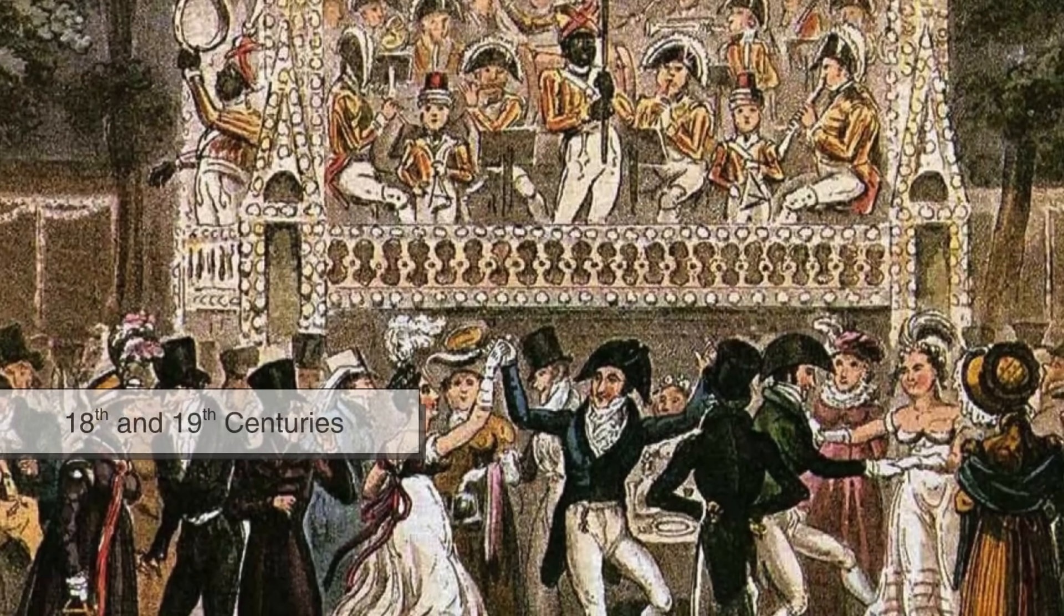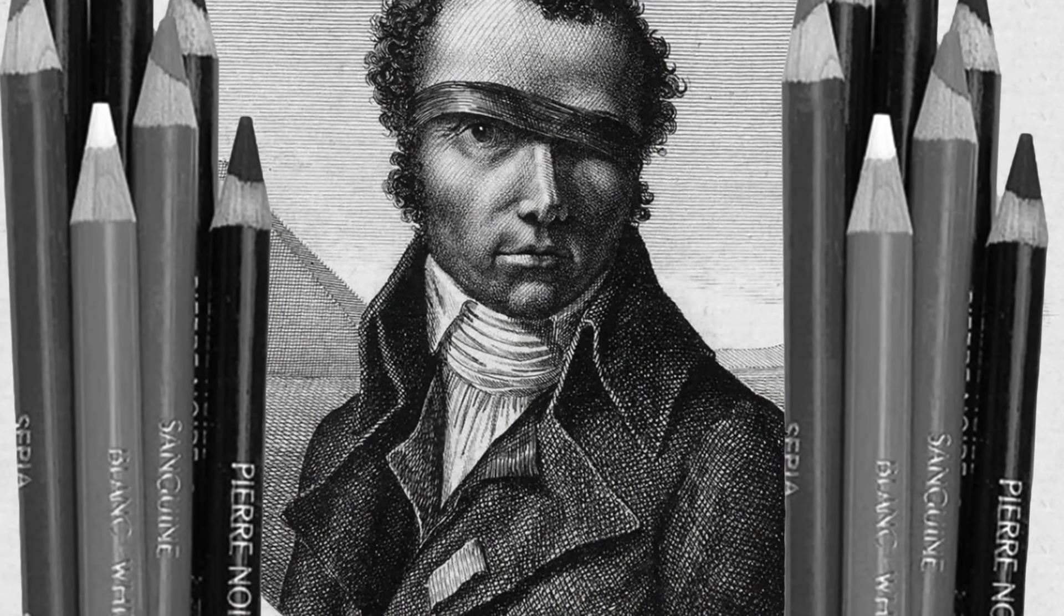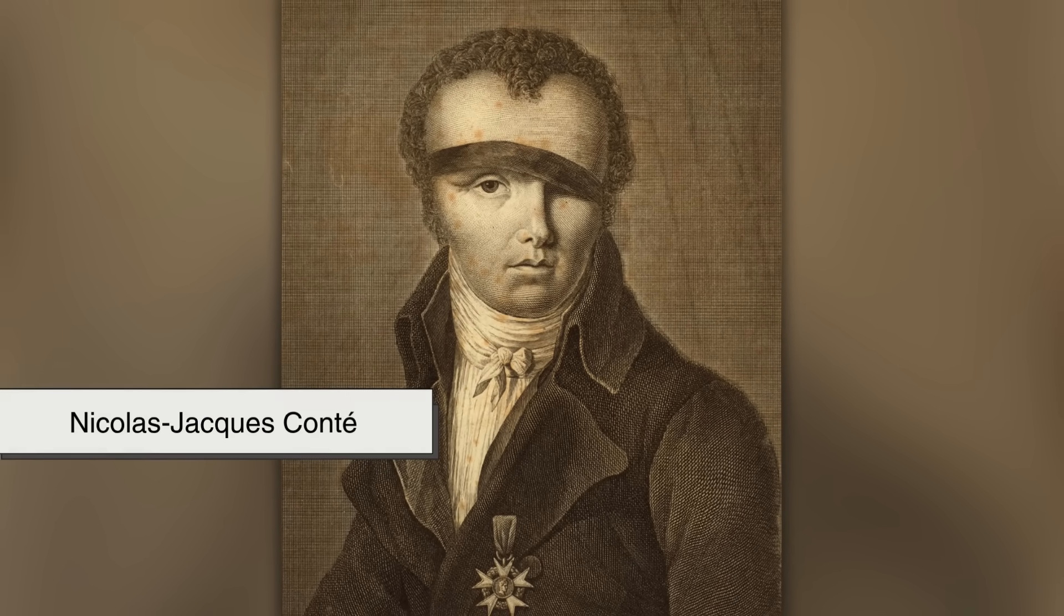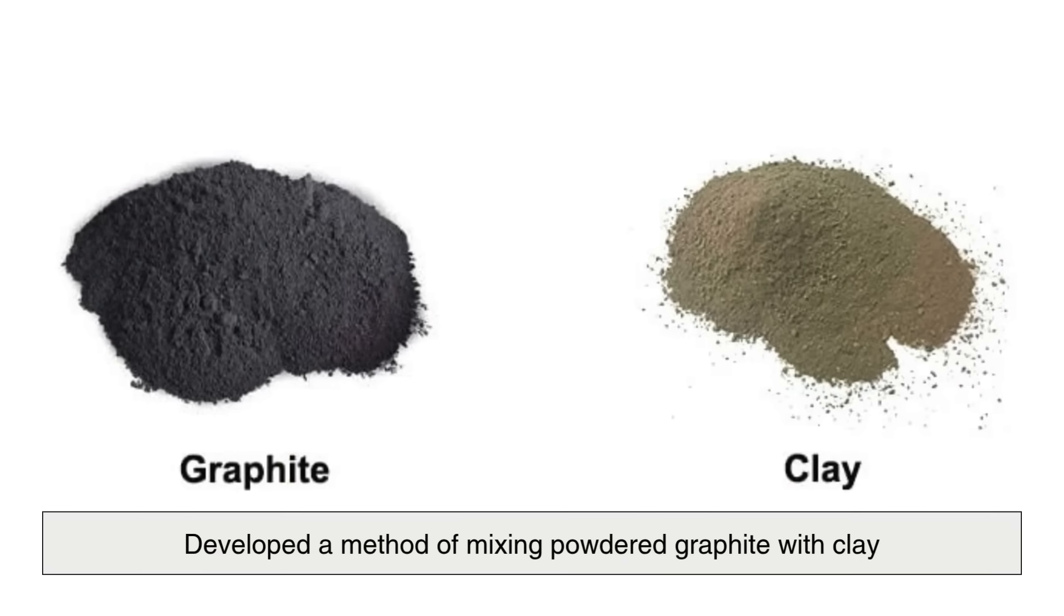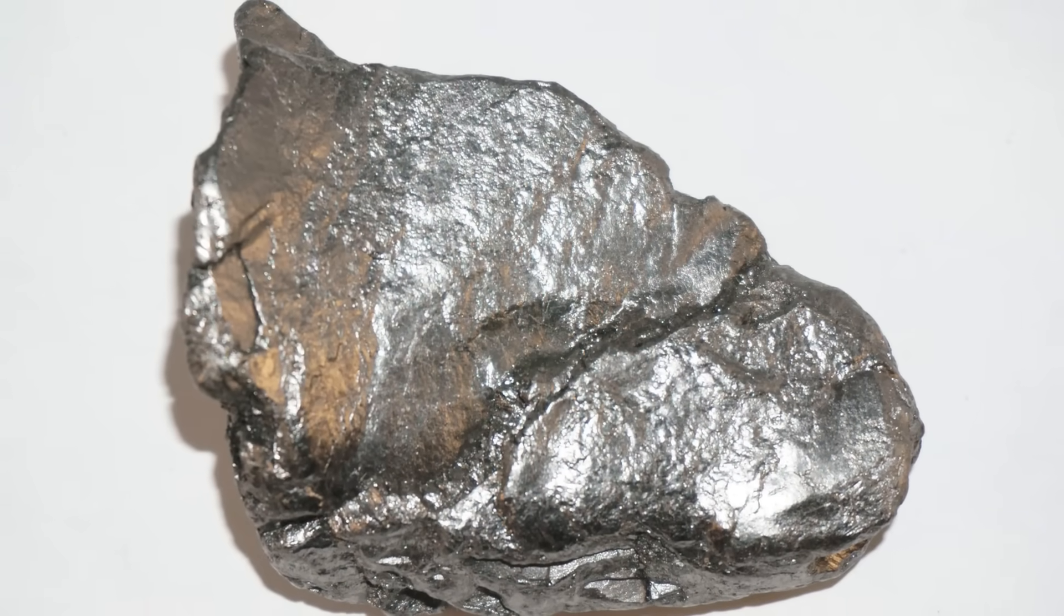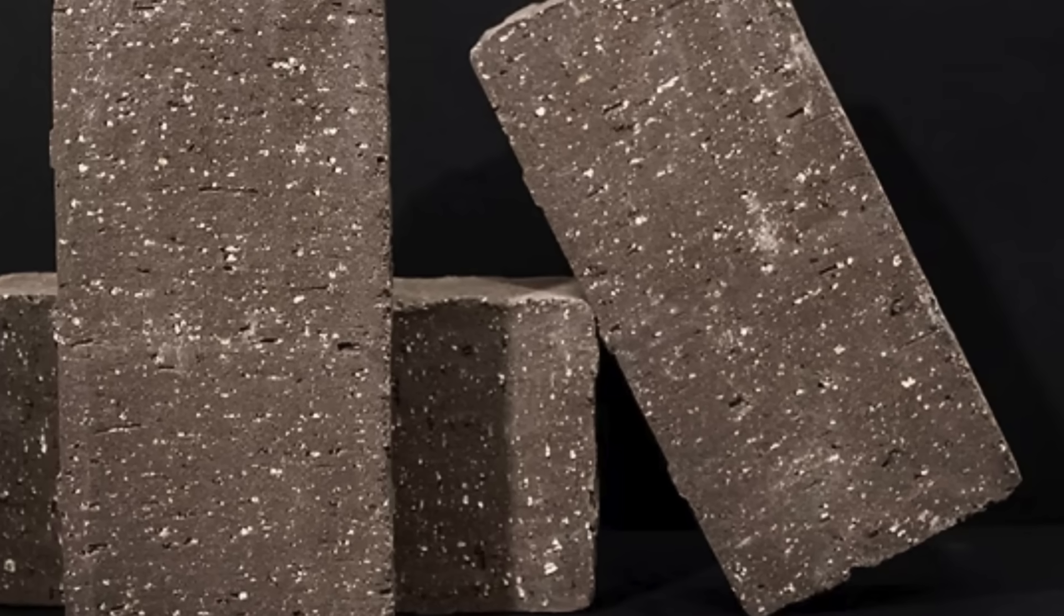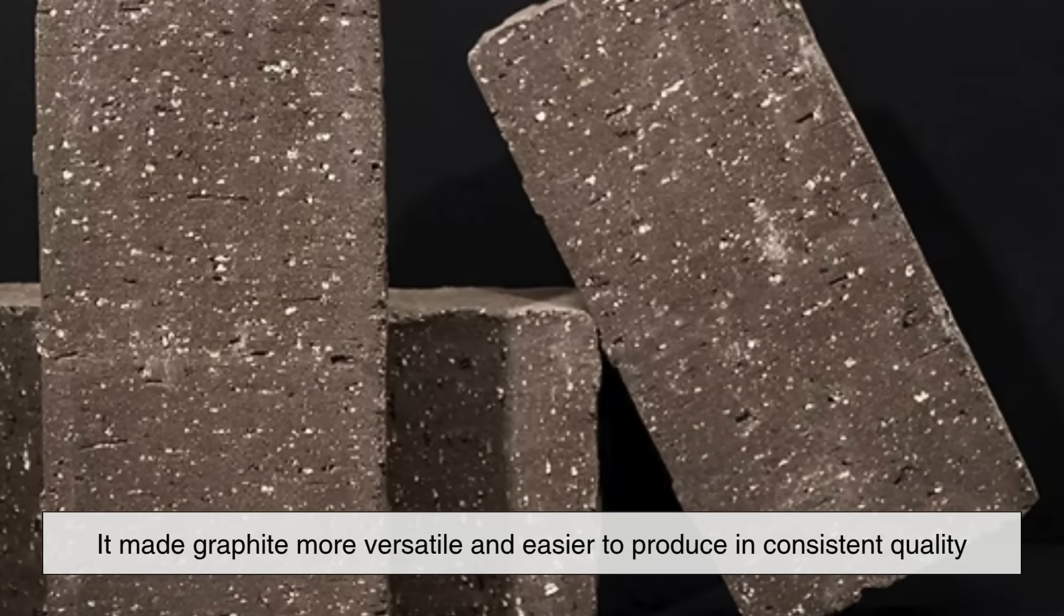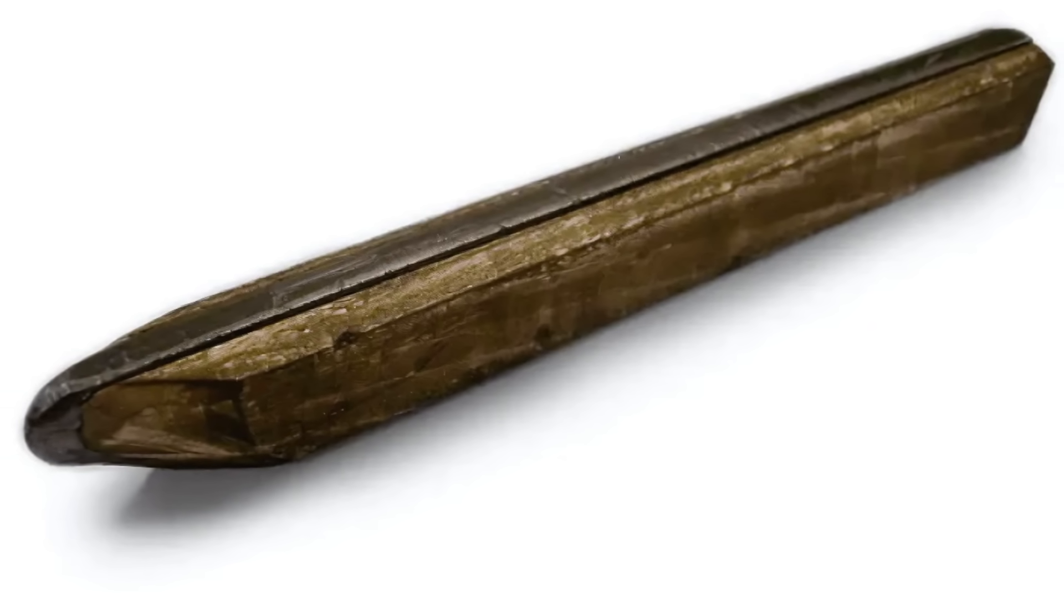This brings us to the 18th and 19th centuries, when the pencil industry began to flourish. In 1795, a Frenchman named Nicolas-Jacques Conte developed a method of mixing powdered graphite with clay and firing it in a kiln, which allowed manufacturers to control the hardness of the graphite. This was a game-changer. It made graphite more versatile and easier to produce in consistent quality, removing the dependency on the rare and expensive Borrowdale deposits.